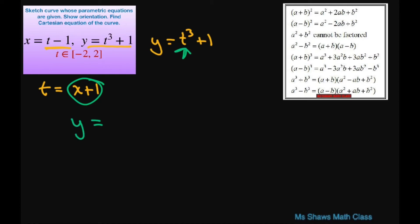So you're going to get y equals x plus 1 cubed plus 1. I'm going to use this expansion here, binomial expansion. And this is going to give you x cubed plus 3x squared plus 3x plus 1. And then you have this additional plus 1. So this is going to equal y equals x cubed plus 3x squared plus 3x plus 2.